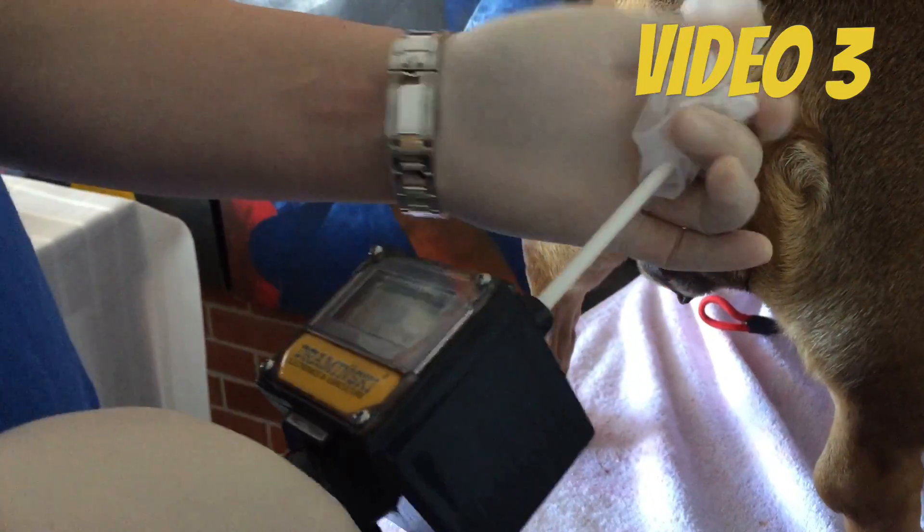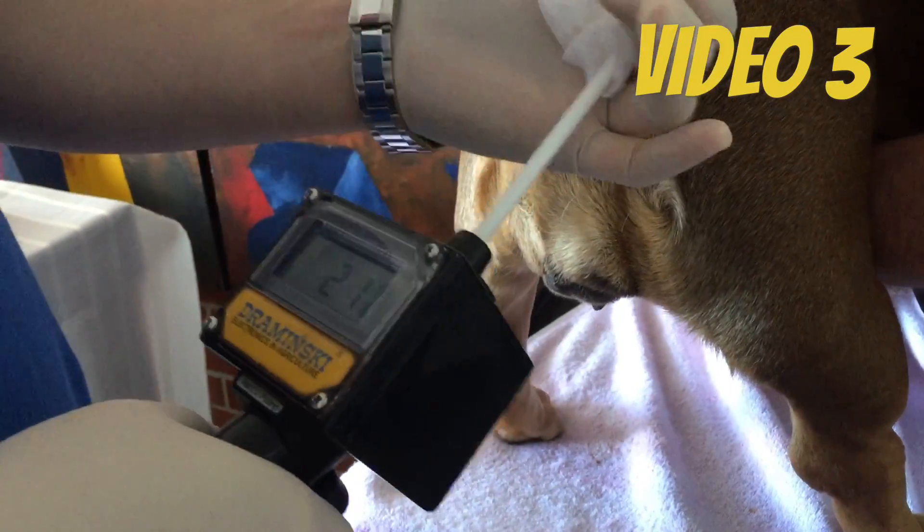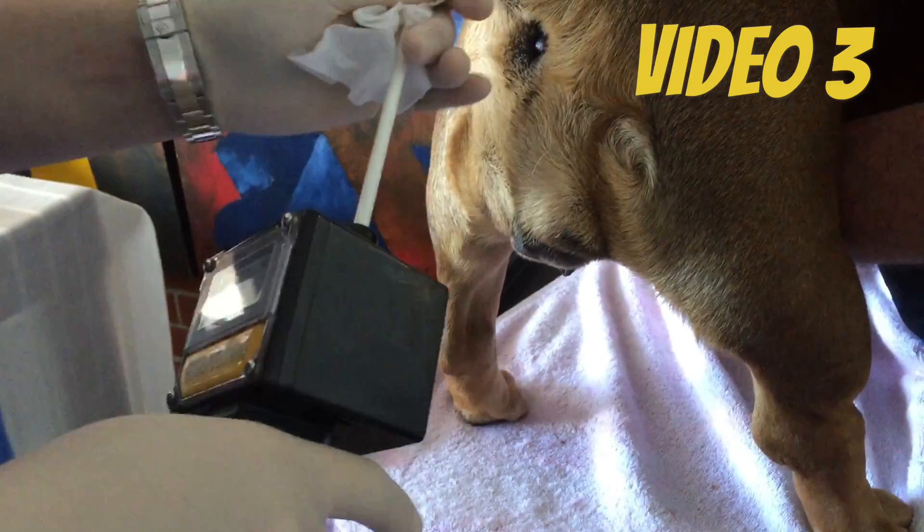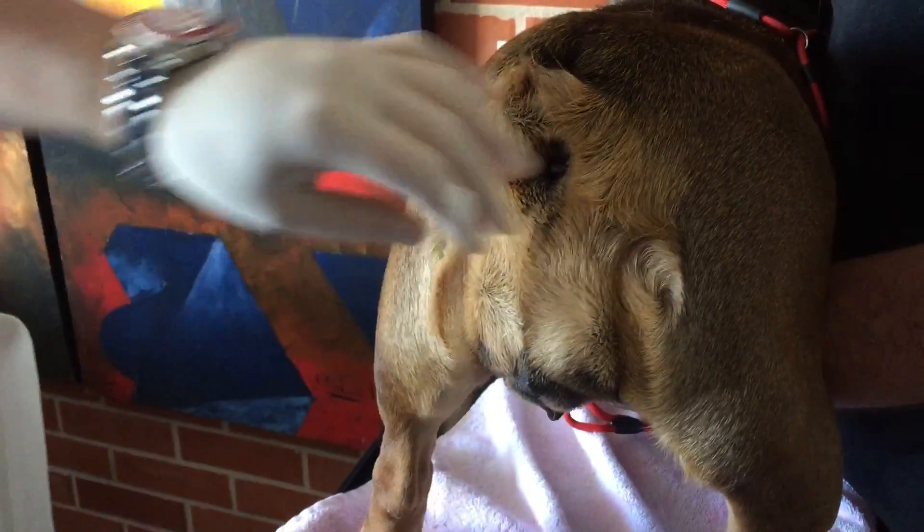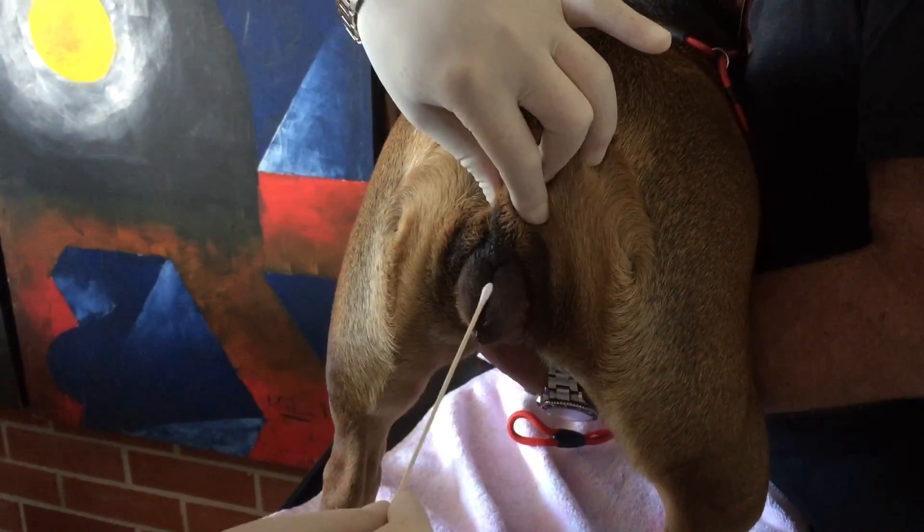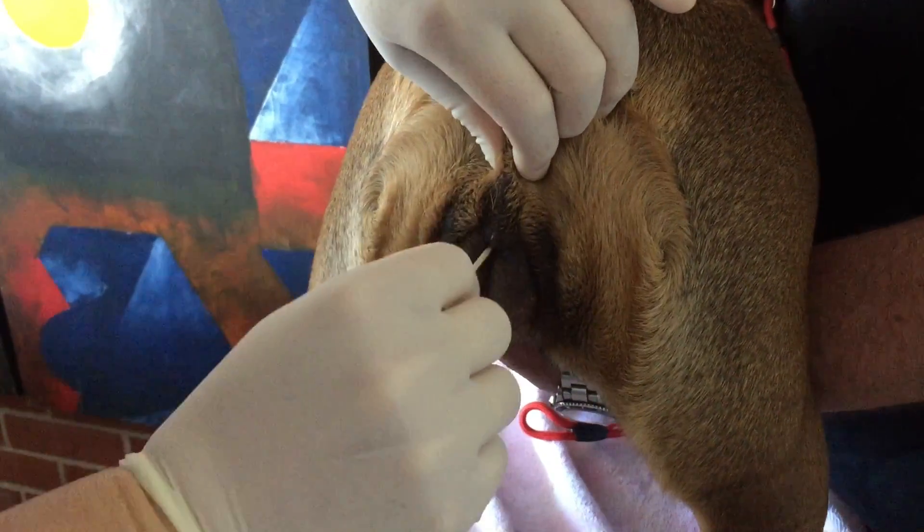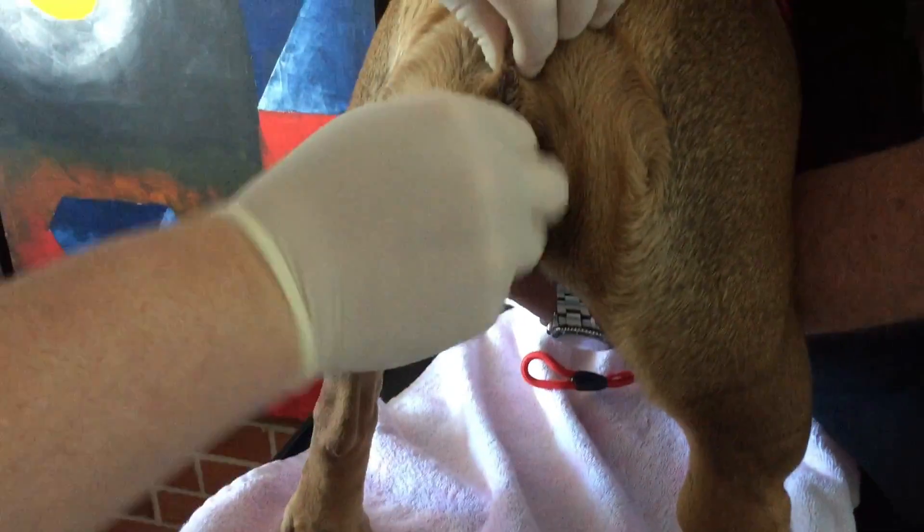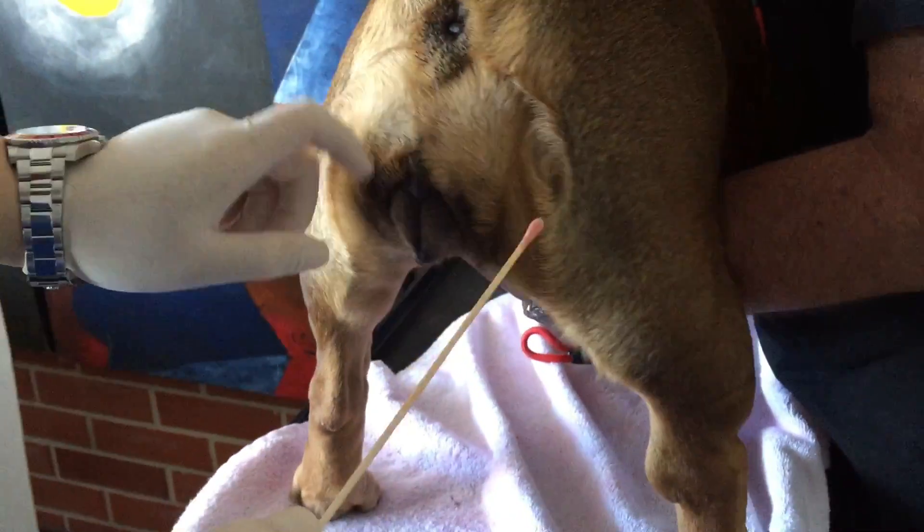So this means that there was already an LH surge and progesterone levels, as our progesterone machine told us yesterday, started to rise. So now let's go and do a vaginal smear. Okay, so we're gonna do the vaginal smear. Now you can see that she's bleeding still and then she's flagging, she's receptive.